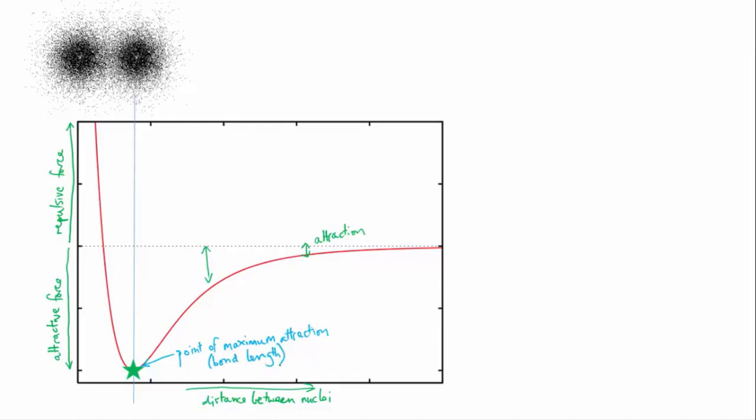If we force the two atoms closer together, the two nuclei come within range of each other. The electron clouds are so far overlapped that they can't shield the positive nuclei from each other, and so they start to repel. So the attraction turns into a repulsion. This forces the atoms apart again until they reach their preferred distance.